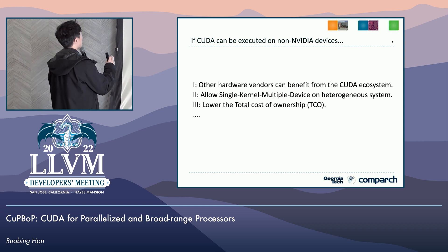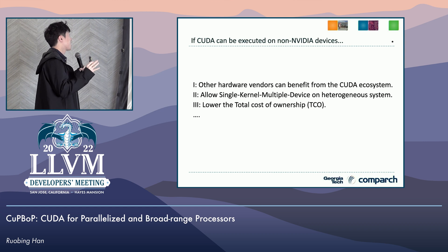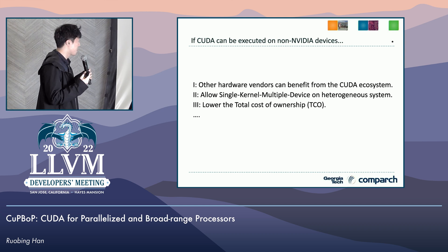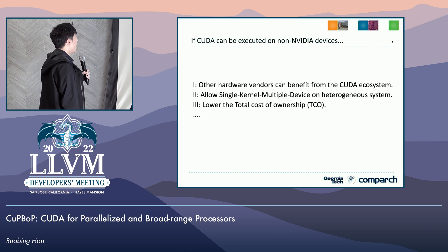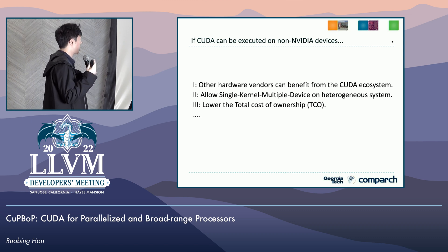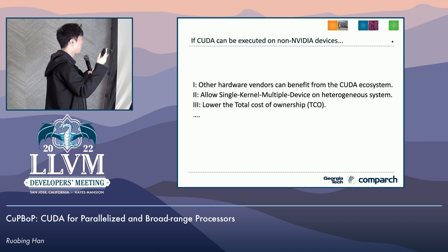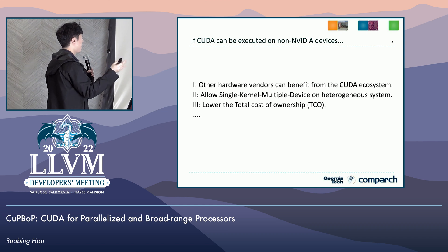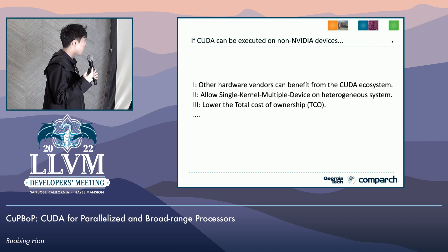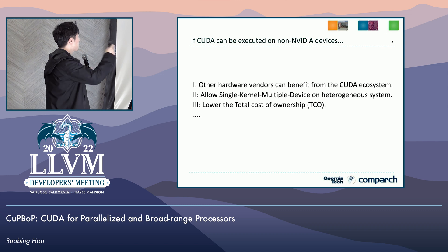If CUDA can be executed on non-NVIDIA devices, other hardware vendors can benefit from the CUDA ecosystem, because there are so many software applications especially great for CUDA. Also, NVIDIA devices are only a small part of heterogeneous systems. If execution is limited to NVIDIA devices, the rest of the heterogeneous system sits idle. Supporting CUDA on other devices enables single-kernel multiple-device execution. Further, in data centers there are many idle CPU devices, and utilizing those could lower the total cost of ownership.